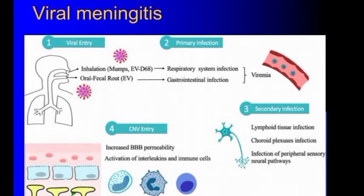Viral meningitis has a similar type of feature. As viruses are acellular organisms, the first pathogens seen include enteroviruses and mumps virus. They can enter the body by the inhalation route or by the oral-fecal route.